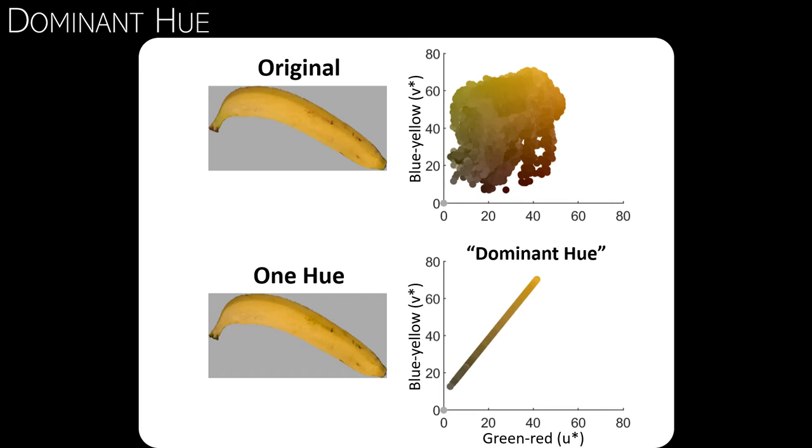This hue may be found by a principal component analysis, and we will call it dominant hue. Yet I hope you can see with your own eyes that the two bananas on the left are strikingly similar.